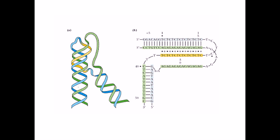Looking at this common DNA structure, we have a five prime and three prime of the green strand, and a three prime and five prime of another strand. This is a straight DNA molecule, but due to some structural stress, the molecule can be bent. The bending occurs at the joint between the blue and yellow colored segments.